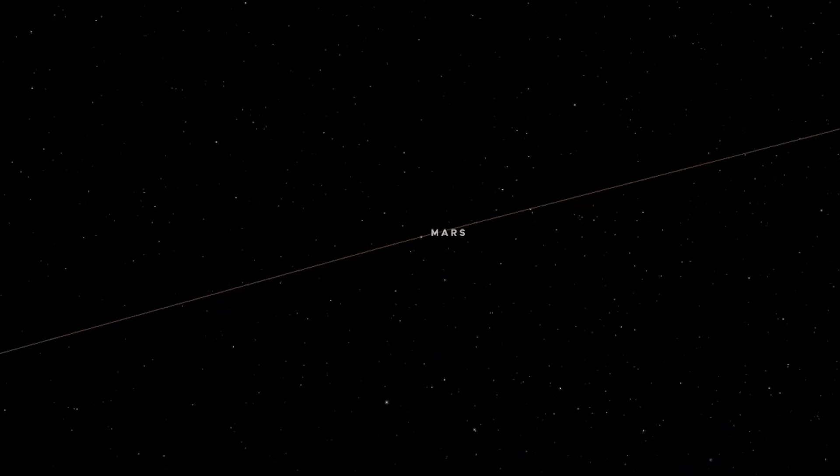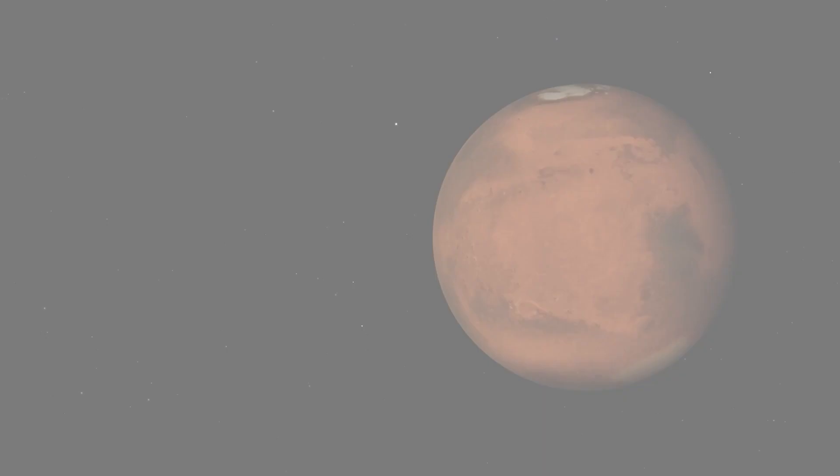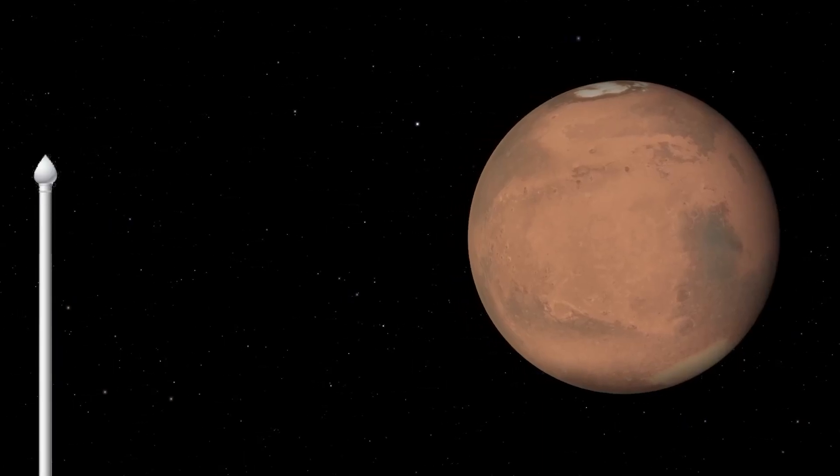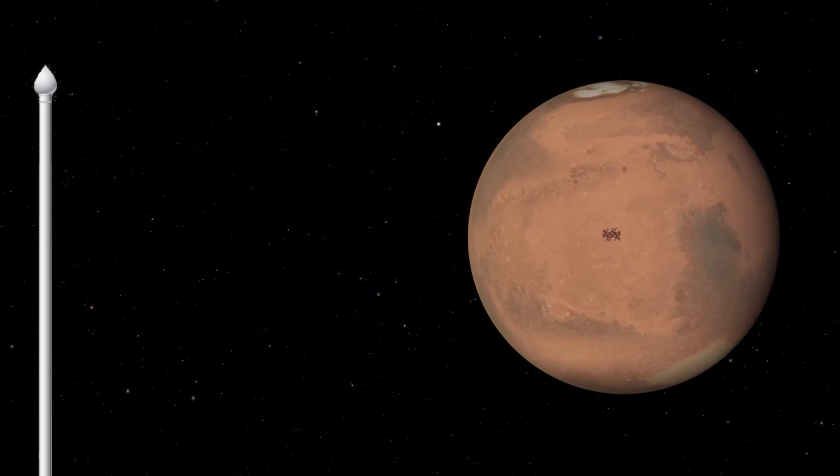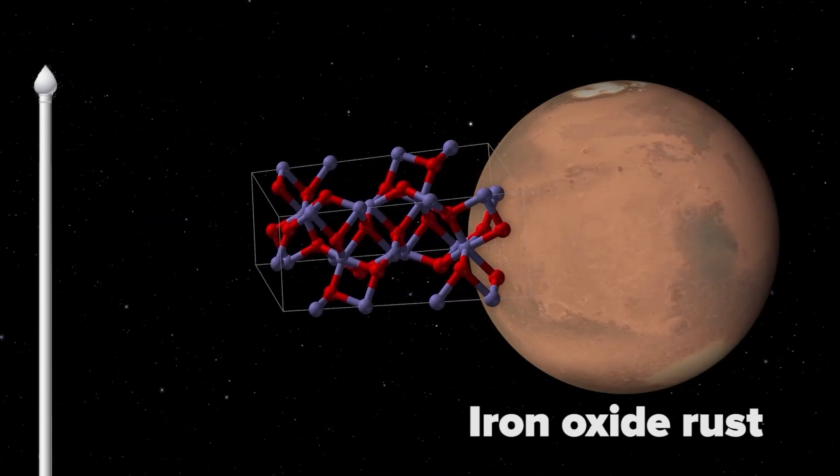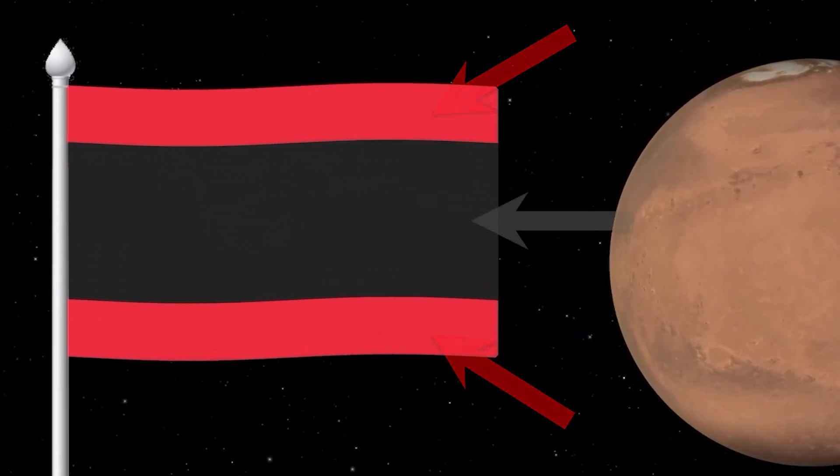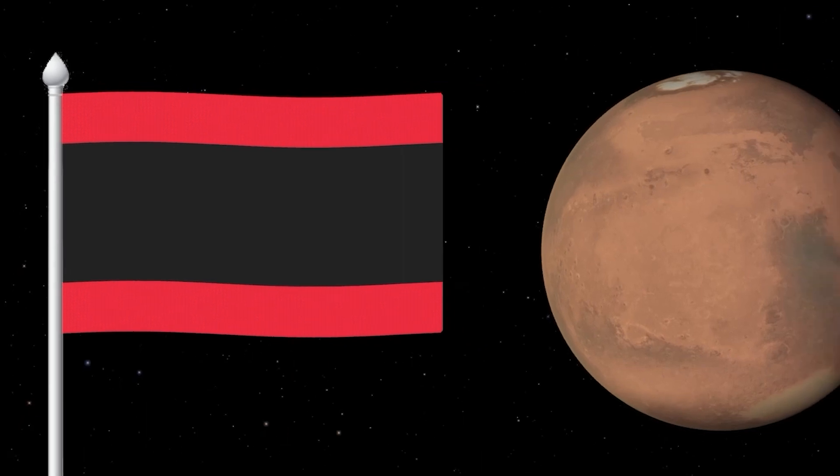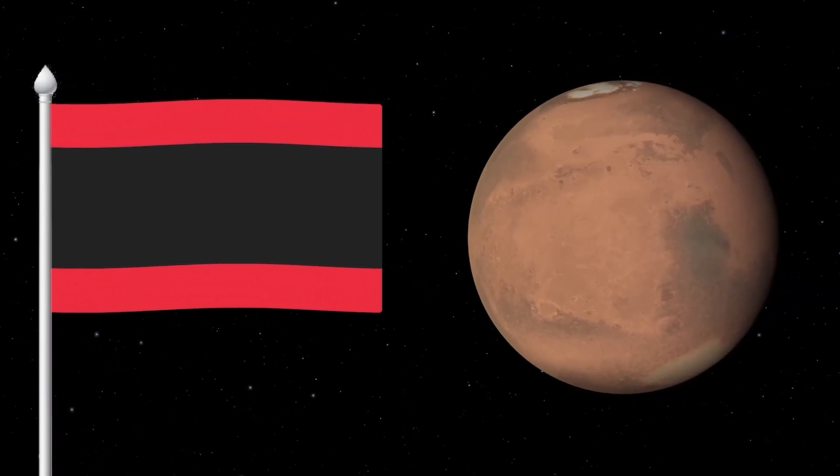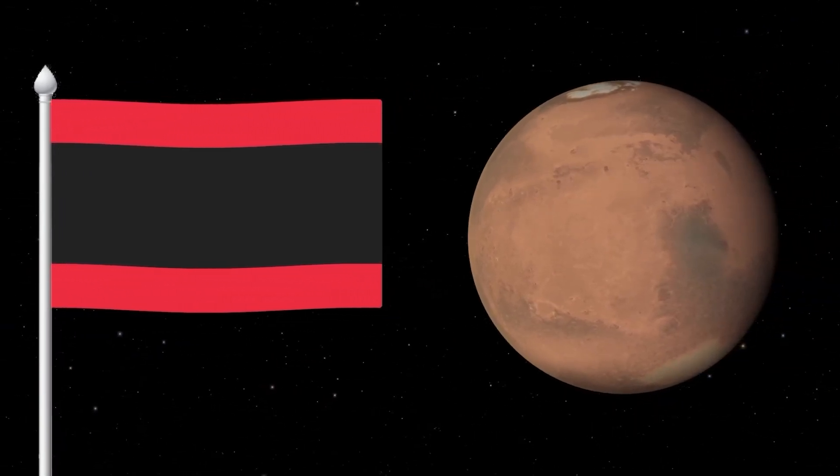Our next planet is often called the Red Planet. Why, you may ask? It owes its name to the reddish color of its surface, which is due to the presence of iron oxide rust. So we'll show this redness with two red bands at the top and bottom and a black band in the center that is slightly larger than the red ones, which will once again signify the blackness and emptiness of space.